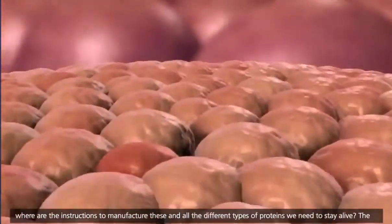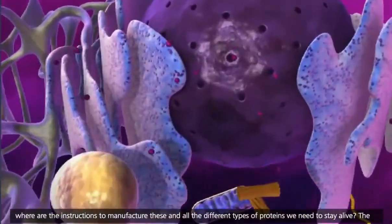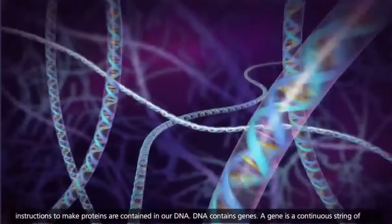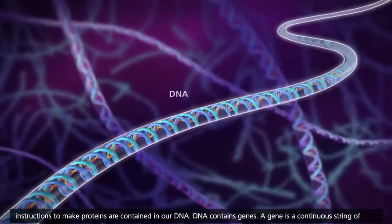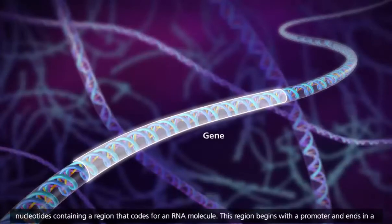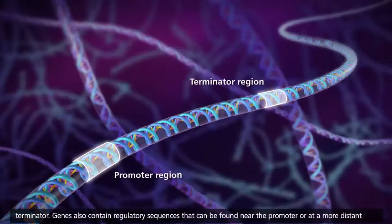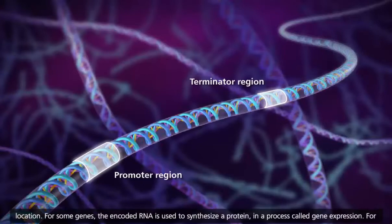And where are the instructions to manufacture these and all the different types of proteins we need to stay alive? The instructions to make proteins are contained in our DNA. DNA contains genes. A gene is a continuous string of nucleotides containing a region that codes for an RNA molecule. This region begins with a promoter and ends in a terminator. Genes also contain regulatory sequences that can be found near the promoter or at a more distant location.